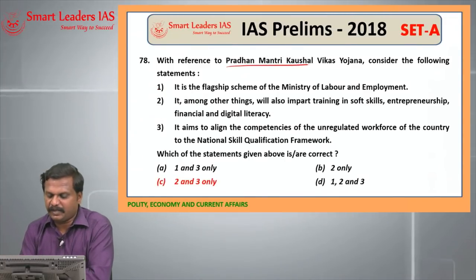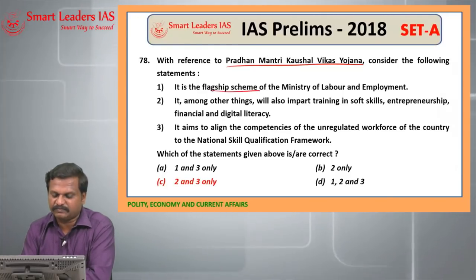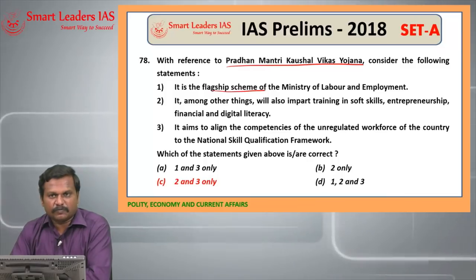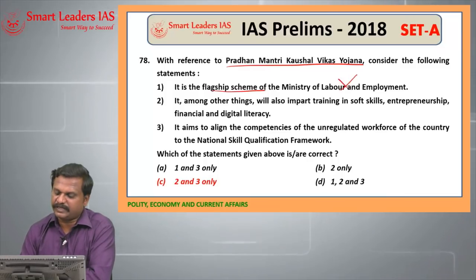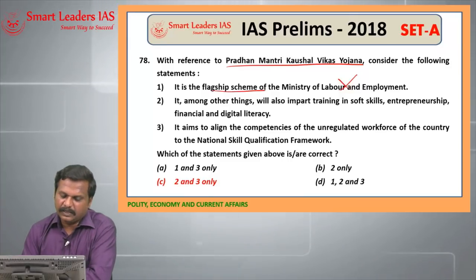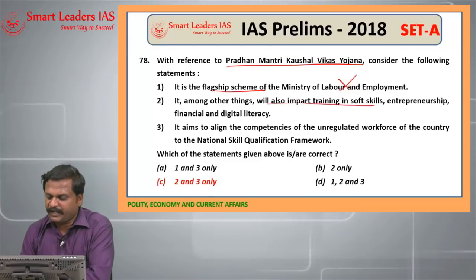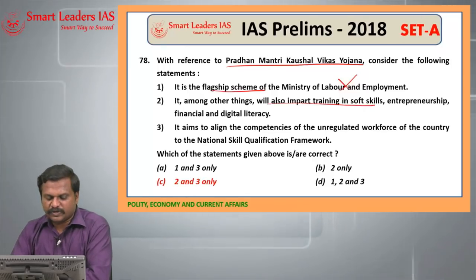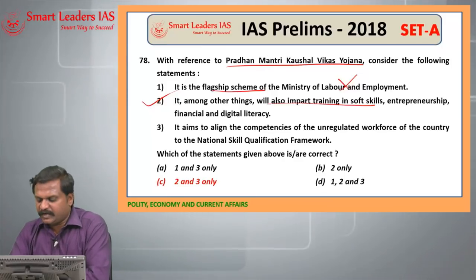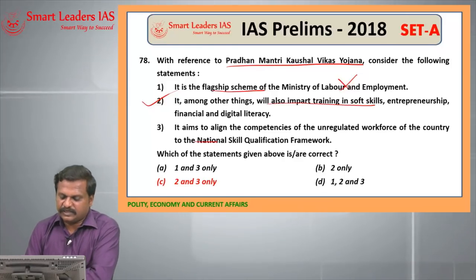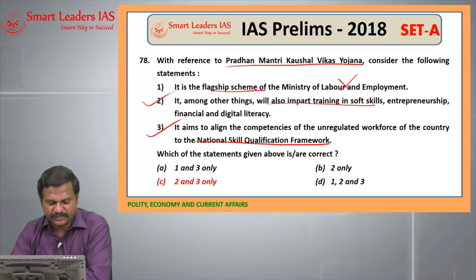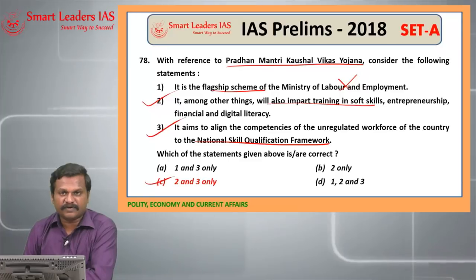78th question: PM Kaushal Vikas Yojana is a flagship scheme of the Ministry of Skill Development and Entrepreneurship — so the statement that it is under the Ministry of Labour and Employment is wrong. Among other things, it will impart training on soft skills, entrepreneurship, financial and digital literacy — this is a right statement. It aims to align the competencies of the unregulated workforce of the country to the National Skill Qualification Framework — this is also a right statement. So statement 1 is wrong, 2 and 3 are right. The answer is C for the 78th question.